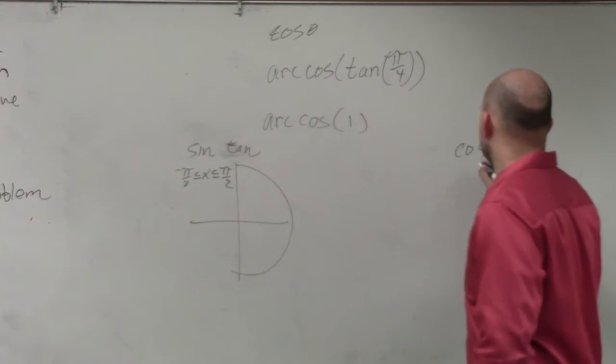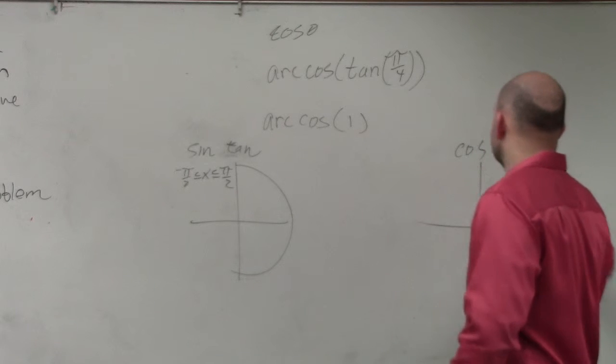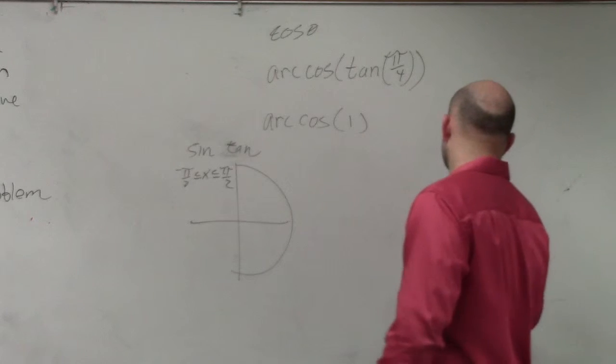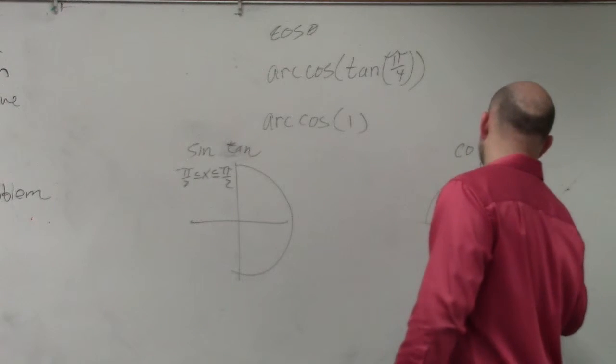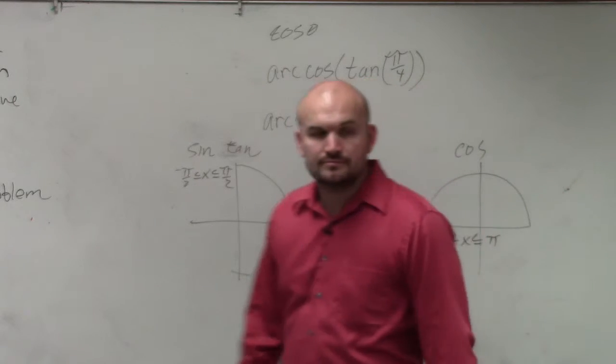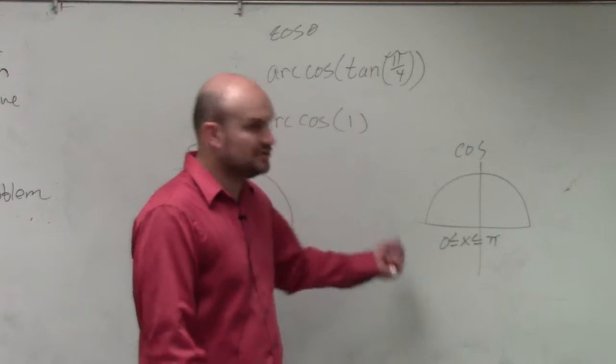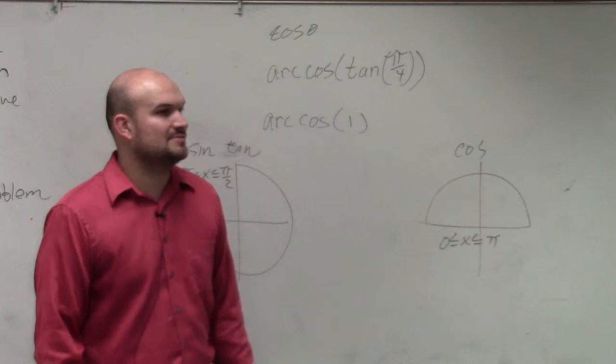For cosine, the constraint is between 0 and π. These are the two constraints that I discussed last class period.